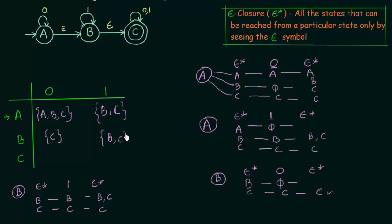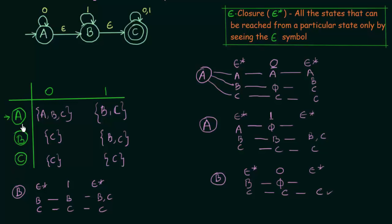The last state is C — I will not solve it here, but if you follow the procedure, C goes only to C on both inputs 0 and 1. Now we have the complete transition table for our NFA. But what is our final state? In the Epsilon NFA, C was the final state. In the NFA, the final state is any state that can reach the original final state only by seeing Epsilon. A can reach C via Epsilon, and B can also reach C via Epsilon. So A, B, and C are all final states. In our NFA, A is the initial state and A, B, C are all final states.